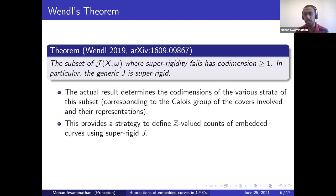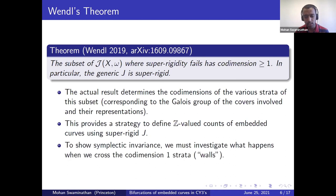This generic super rigidity result provides us with a strategy to define integer valued counts of embedded curves, provided we restrict to a super rigid J. However, as I said earlier, we are not assured that this is going to be independent of J, because in a generic one parameter family of J's, we might have the loss of super rigidity when we cross one of these codimension one strata, which I'll refer to as walls. So we need to actually investigate what happens when we cross these walls in order to check symplectic invariance.